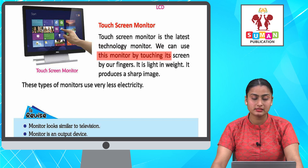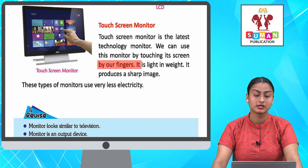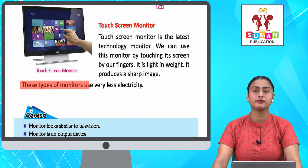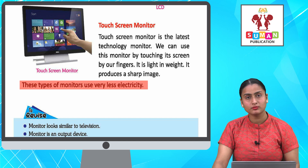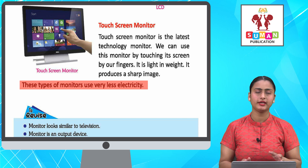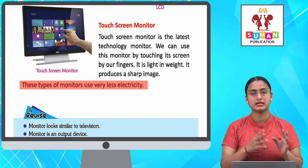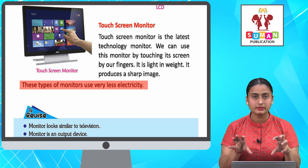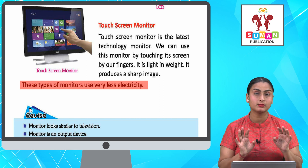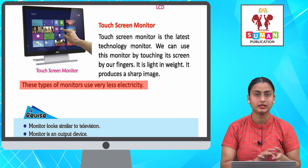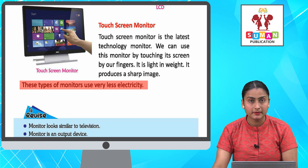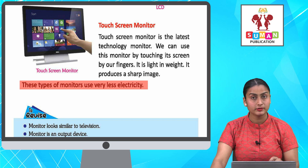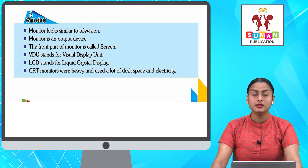We can use a touch screen monitor by touching its screen with our fingers. It is light in weight, produces a sharp image, and uses very less electricity. Touch screen monitors compact hote hain, bhoat light hote hain, aur aap inhe aasani se carry bhi kar sakte hain. Aapne fingers ke through koi bhi command de sakte hain — kisi visible hard keyboard ki zaroorat nahi hoti. Yeh bhoat hi kum electricity use karte hain.